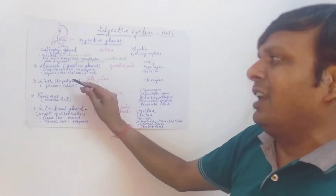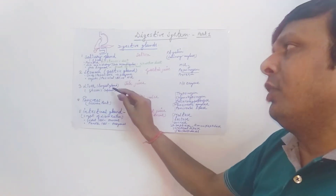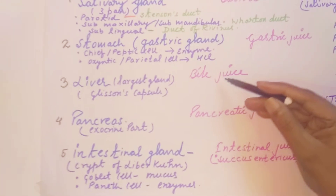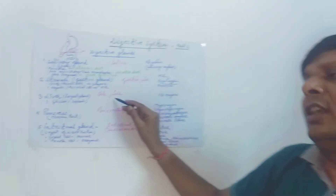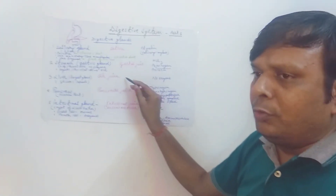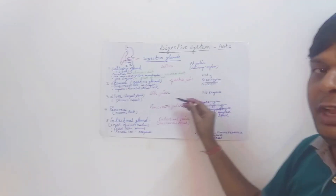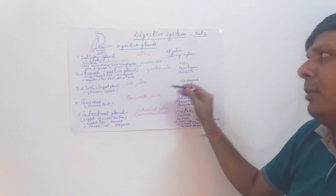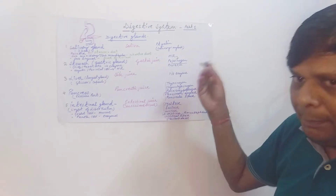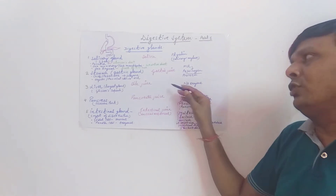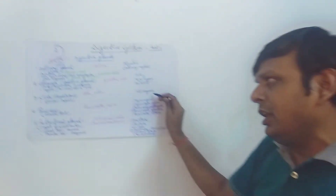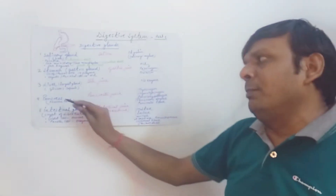Liver is the largest gland and its lobes are covered with a connective tissue termed Glisson's capsule. Liver mainly secretes bile juice, which is yellowish-green in color due to the presence of pigments bilirubin and biliverdin. Bile juice also contains bile salts known as sodium glycocholate and sodium taurocholate. Bile mainly helps in lipid digestion by a process known as emulsification. Note that bile does not contain any digestive enzymes.